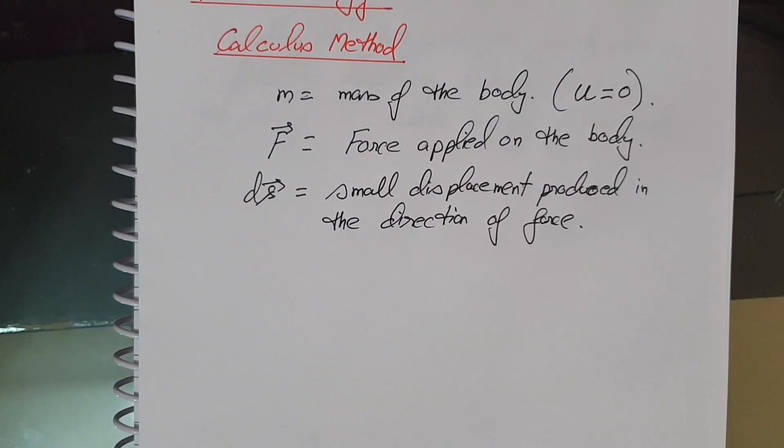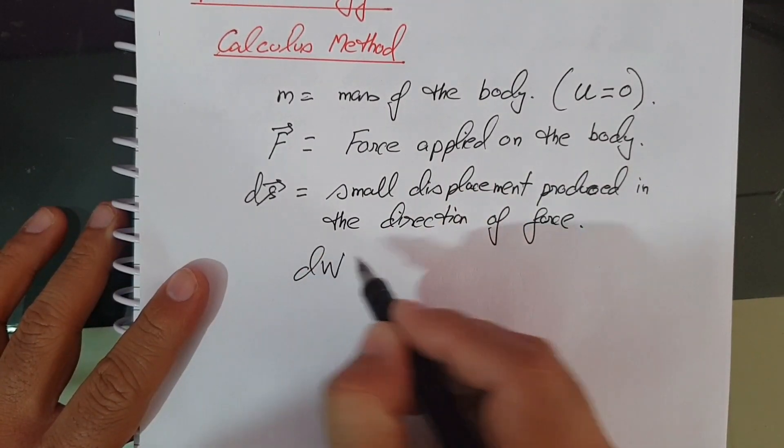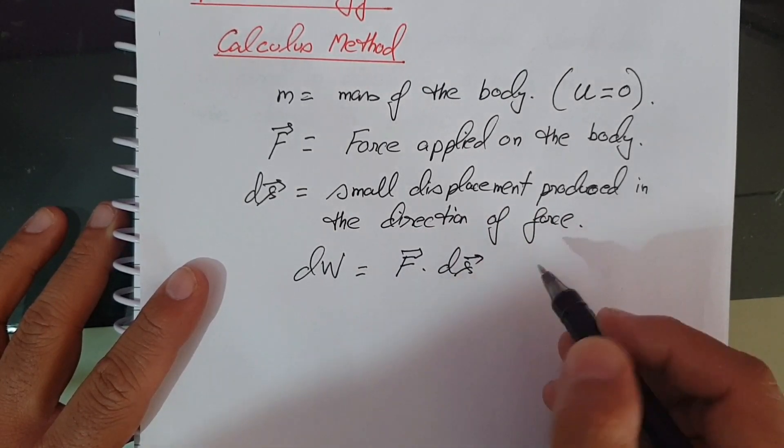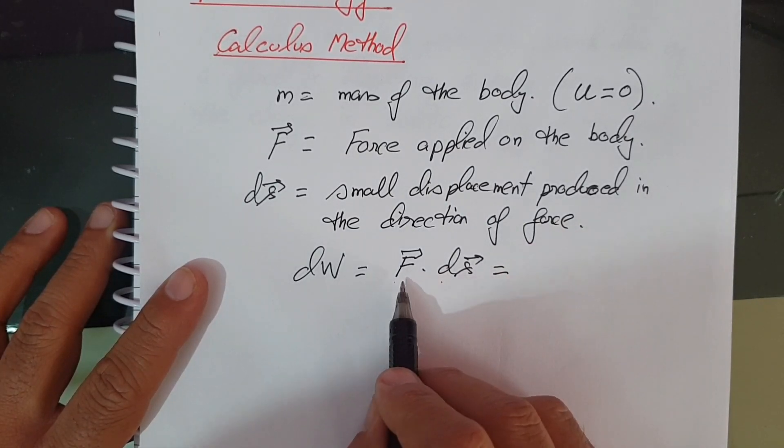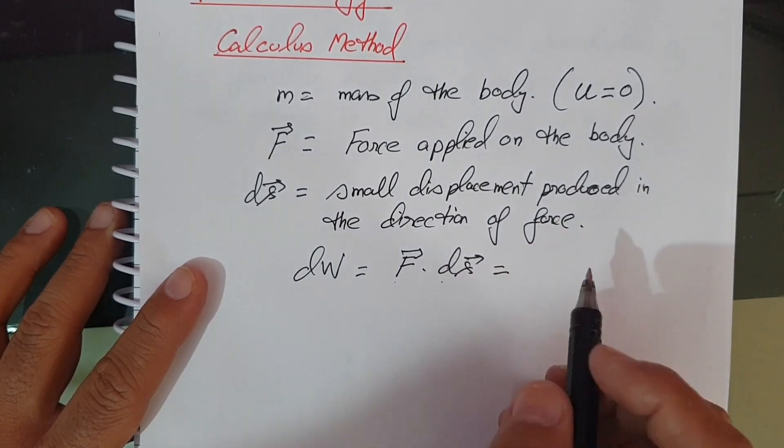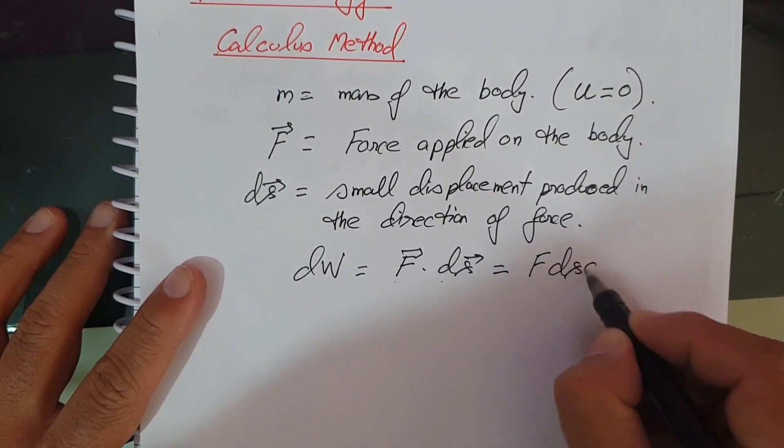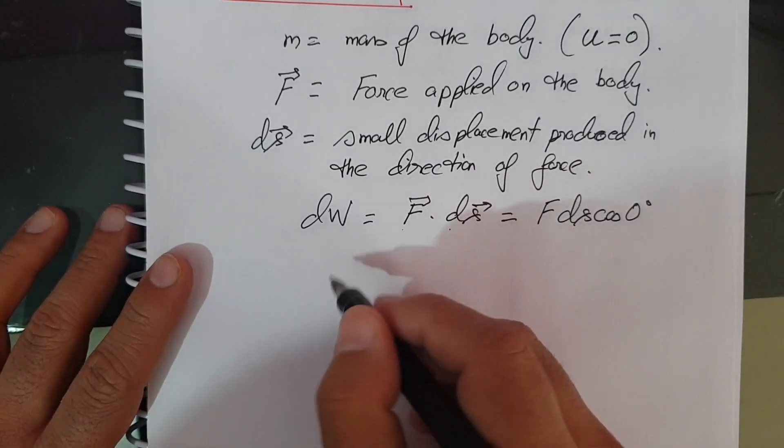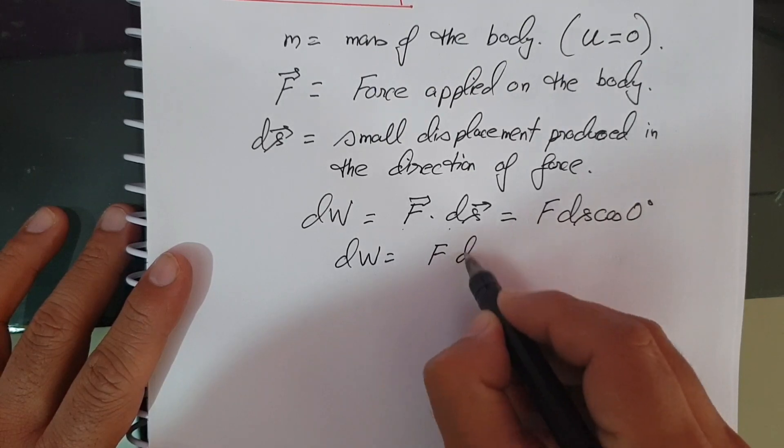Now see, the small work done by the force dW is calculated like this: F dot dS, that's a dot product. Now they are in the same direction, so the angle between them is zero. So this will be F dS cos zero. So dW equals F dS.